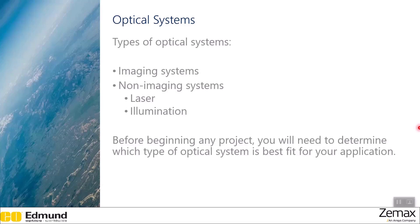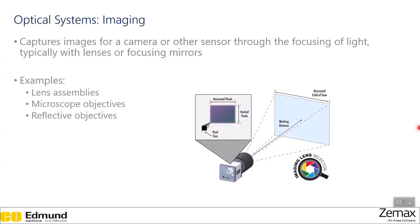Imaging systems, as the name implies, capture images for a camera or other sensor through the focusing of light, typically with lenses or focusing mirrors. Some examples of this include lens assemblies, microscope objectives, or reflective objectives.